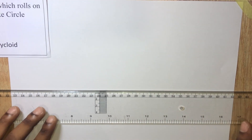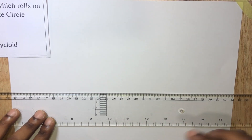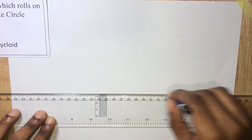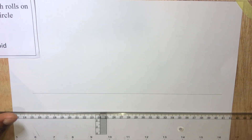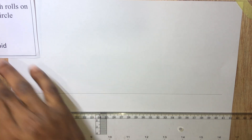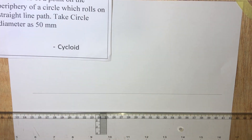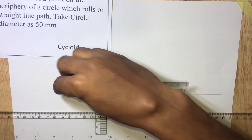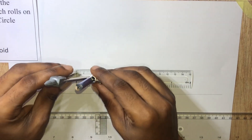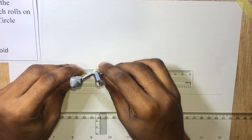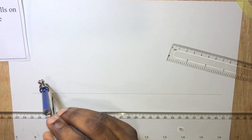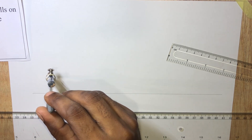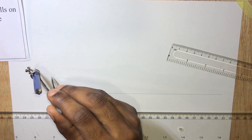So let's draw a straight line. Now the circle has a diameter of 50 millimeters, so the radius will be 25 millimeters. So let's measure 2.5 centimeters, stand here and give a marking. I'm going to stand here to draw that circle.